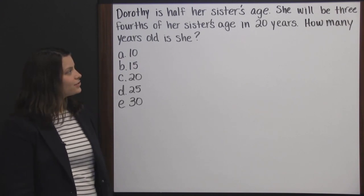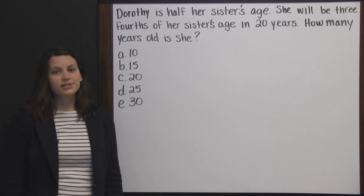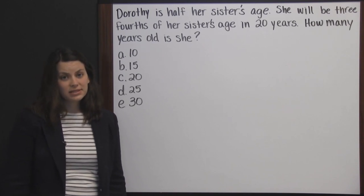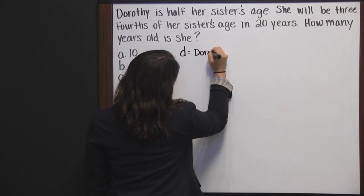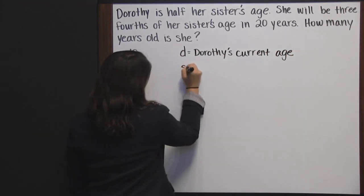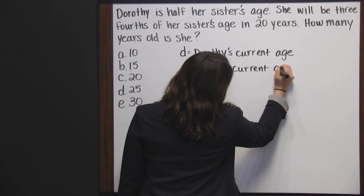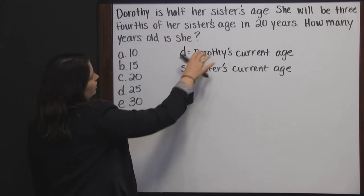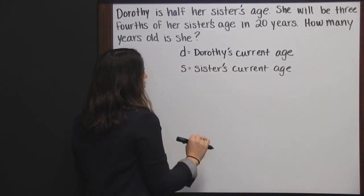Dorothy is half her sister's age. She will be 3 fourths of her sister's age in 20 years. How many years old is she? We have two unknowns here — we don't know Dorothy's age, and we don't know her sister's age. So I'm going to make up two variables: D for Dorothy's current age and S for the sister's current age. I say current because they're talking about their ages now and also their ages in 20 years. What we want to know is how many years old she is now.